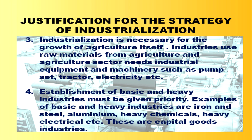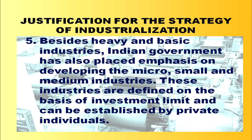The fourth justification is that basic and heavy industries must be given priority within industrialization. Examples include iron and steel, aluminium, heavy chemicals, and heavy electricals — these are capital goods industries needed for growth in both the short and long run. The Indian government has also placed emphasis on developing micro, small, and medium industries, defined on the basis of investment limits and established by private individuals.